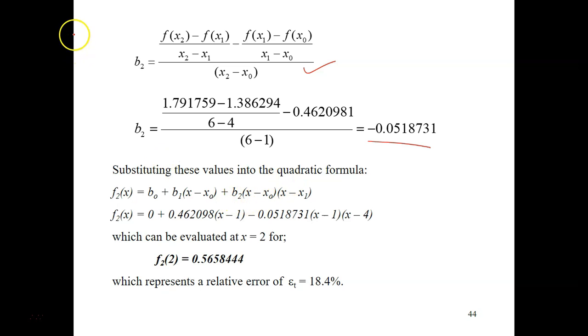Okay? And then, when you got all your b0, b1, and b2, you can substitute into this second order polynomial equation. So, f2(x) equals to b0 plus b1, and so on. So, b0 is 0. b1 here is the one that you just calculated just now. And this one is here, from here. And then, this is what you got.